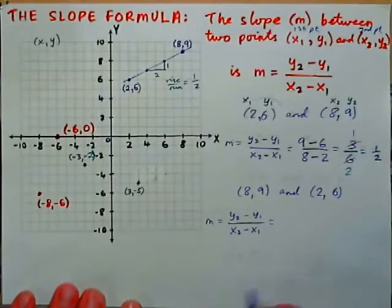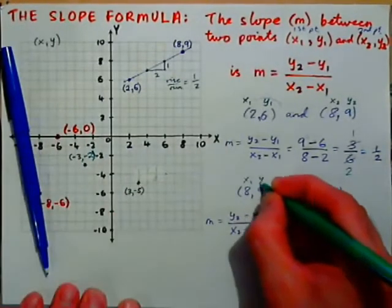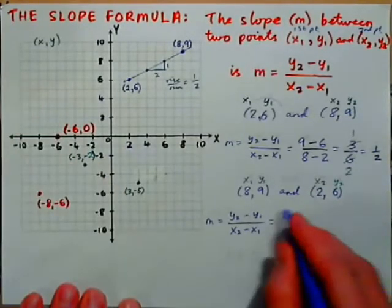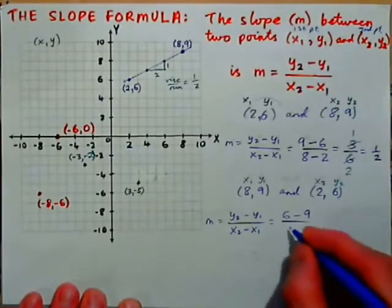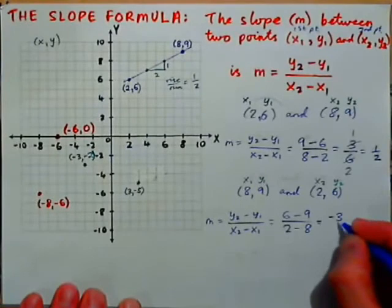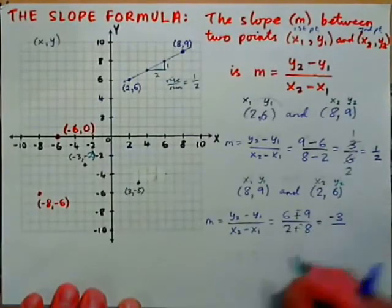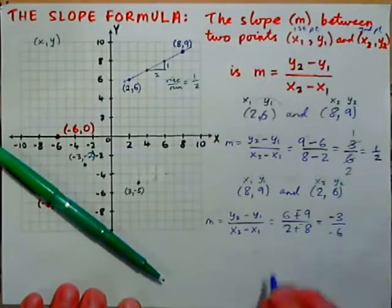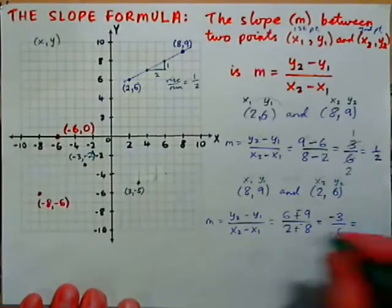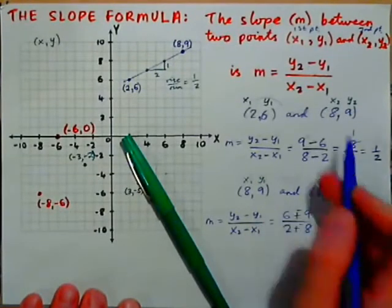You remember 40% of what you write down, so write it a few times. In this case, (8,9) is (x1, y1) and (2,6) is (x2, y2). So y2 is 6, y1 is 9: 6 minus 9 over 2 minus 8. That gives negative 3 over negative 6. Negative over negative is positive, and 3/6 reduces to 1/2. Same answer — it doesn't matter which point you start with.